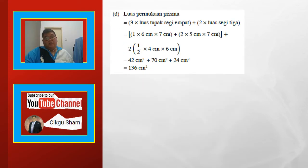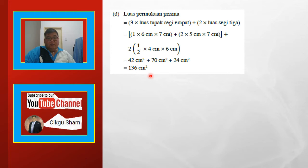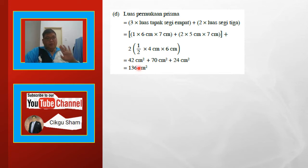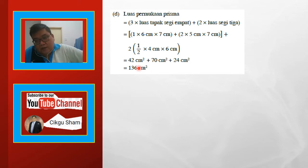Prisma — 3 kali luas tapak segi 4 dan ditambah dengan 2 kali luas segi 3. Kita selesaikan, dapat 138. Bagi setiap bentuk 3 dimensi tu, kita kena cari luas dia — kalau luas dia sama, kita darab je dengan berapa banyak.